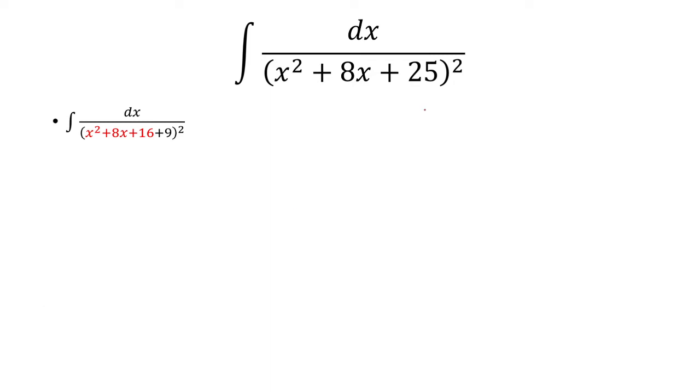First thing we're going to do is break up the 25 as just 16 plus 9. And then we can just factor out the x squared plus 8x plus 16 as just x plus 4 quantity squared.